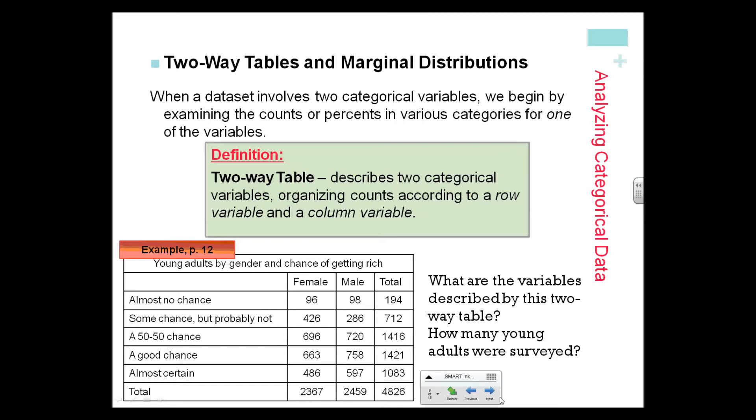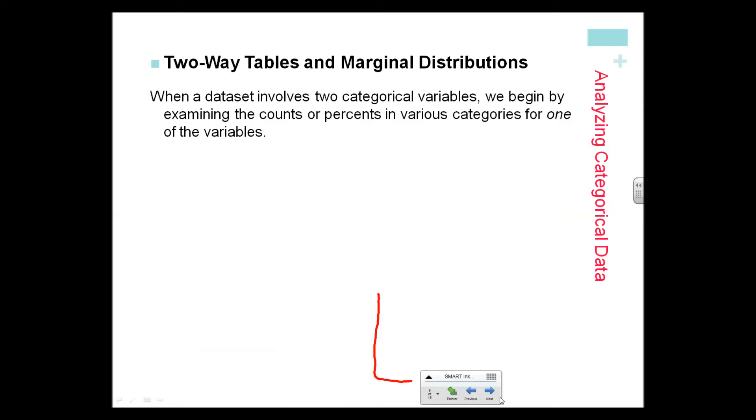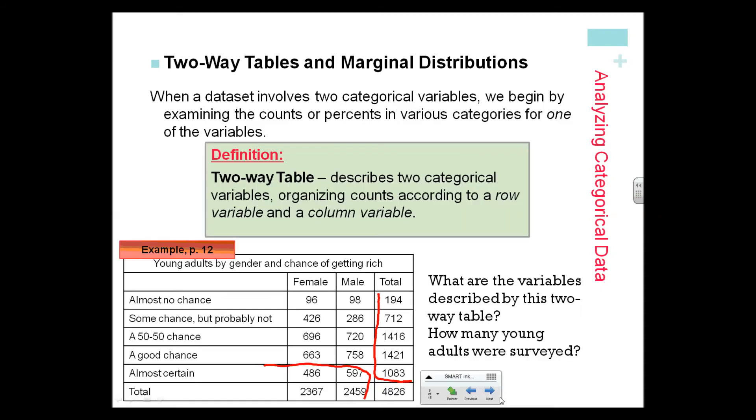Notice at the end you have your column totals on each side. Those numbers are totaling up each row and column, and those marginal totals give you a look at the total number of males, total number of females, total number of people who had said almost no chance, and so forth.